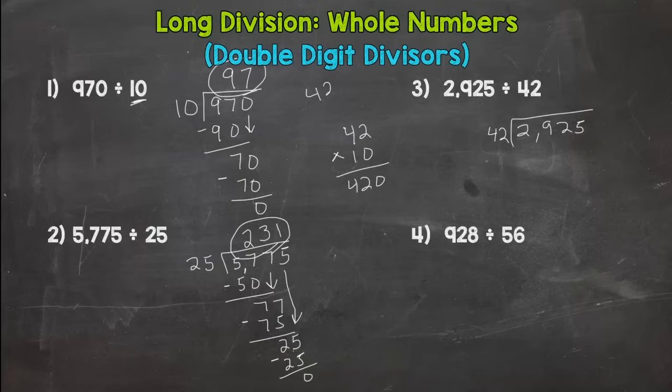So I'm going to try 42 times 7. Let's see what we get. 7 times 2 is 14. 7 times 4 is 28 plus 1, 294. Very close but a little too high so I need to scale it back to 42 times 6. 6 times 2 is 12. 6 times 4 is 24 plus 1, 252. That's as close as I can get there. So I need to put a 6 above the 292, not above the 2, not above the 29, but the 292. And 6 times 42 is 252.